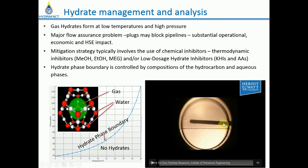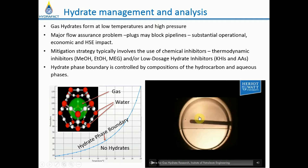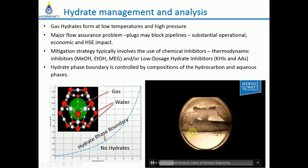This setup here is simulating the cross-section of a pipeline. The water-gas interface is clearly visible, and this is the temperature probe within the setup. There is a thin layer of water on the glass surface. You can now see hydrate formation in this setup — hydrate starts from the gas-water interface and then spreads around.